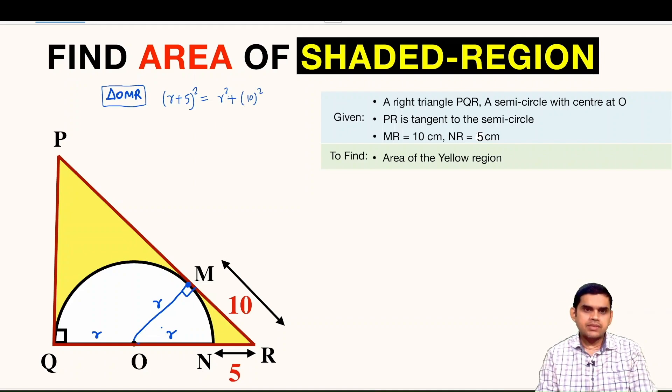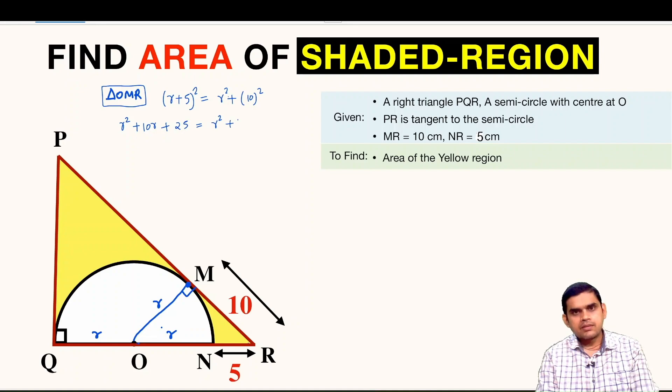Let us now expand this bracket using (A + B) whole square. So this is R square plus 10R plus 25 is equal to R square plus 100. R square and R square gets cancelled.